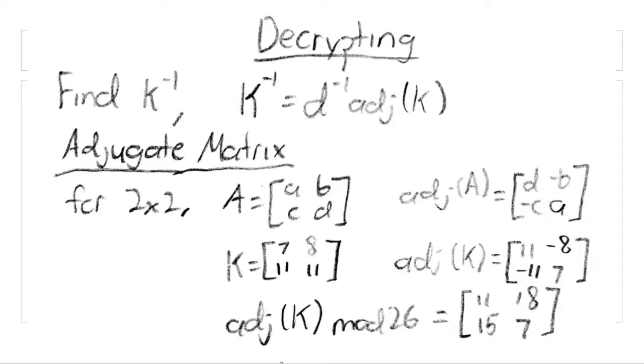The adjugate matrix is easy to find for a 2x2 matrix. A 2x2 matrix containing a, b, c, and d simply becomes d, negative b, negative c, and a. So our key of 7, 8, 11, and 11 becomes 11, negative 8, negative 11, and 7.